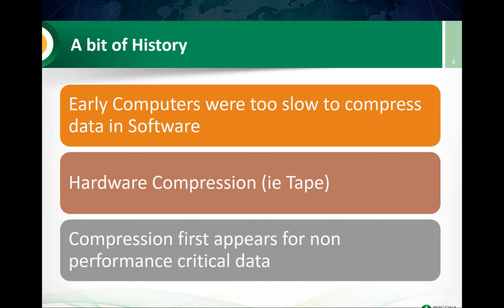If you look at the history of compression way back, going back to the 70s and 80s, computers were really too slow to be able to implement any meaningful compression in software. At that time, we had compression implemented in hardware. Some may remember backup tapes which would have some pretty weak compression implemented in hardware, but that worked better than software compression because CPUs were so slow they couldn't really handle it.